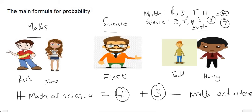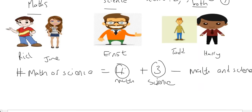And so you have to minus all the people who do maths and science. This over here was maths, this was science, and then we have to minus all the people who do maths and science. Four plus three minus the people who do maths and science, there's two of them, gives us a total of five. So the number of people who do maths or science is five.